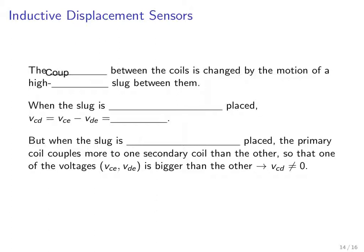The coupling between the coils is changed by the motion of this high mu slug between them. When the slug is symmetrically placed, then the voltage difference between the two outputs, VCE minus VDE, equals 0. But when the slug is asymmetrically placed, then the primary coil is going to couple more to one secondary coil than the other, so one of the voltages is bigger and we get a non-zero voltage output.